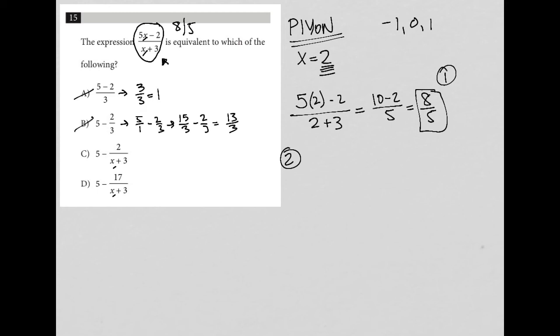Choice C: I'm going to write this as 5/1 minus 2 over... Now I can replace x with 2, so 2 plus 3 is 5. Then 5/1, to have a common denominator, becomes 25/5. So 25/5 minus 2/5 is 23/5, which also doesn't match the 8/5 that I want.